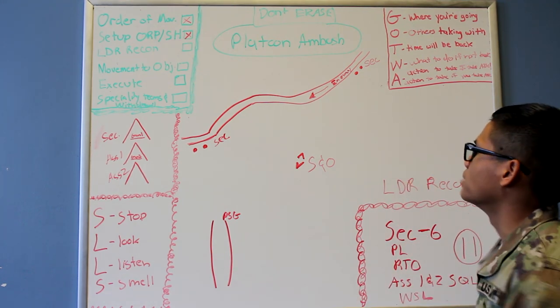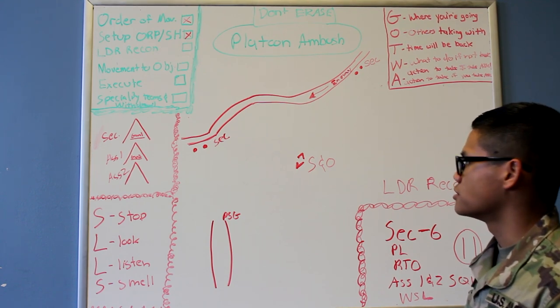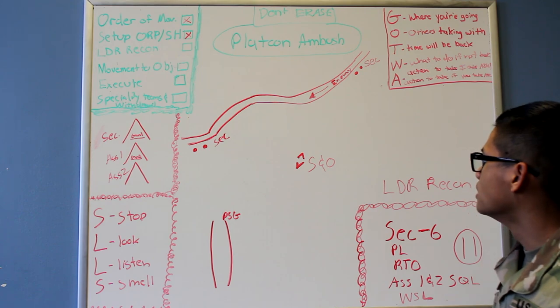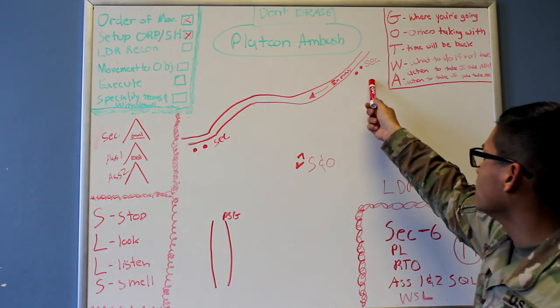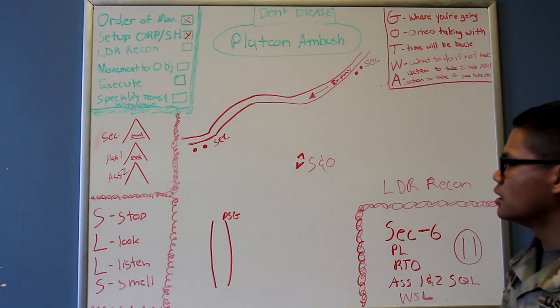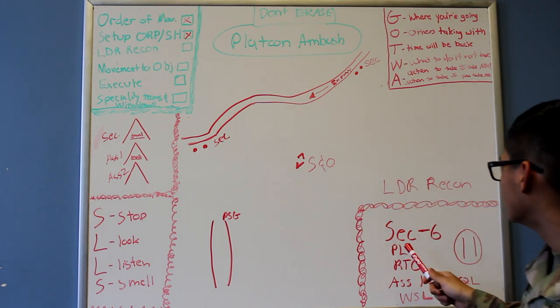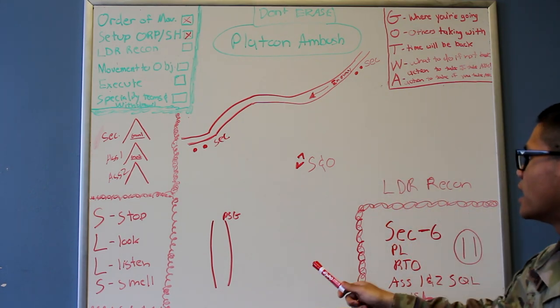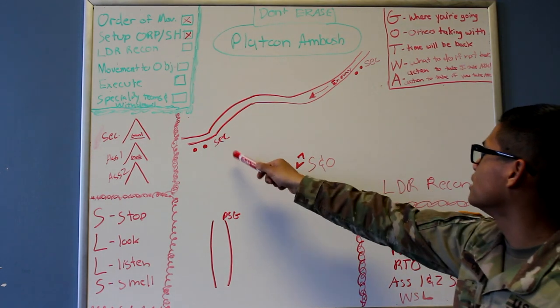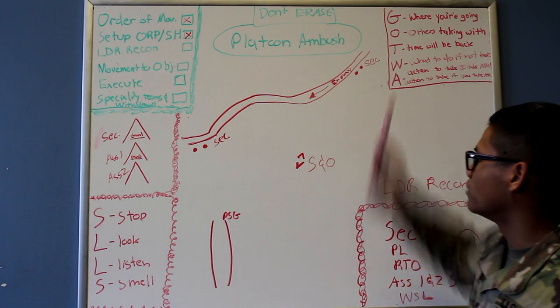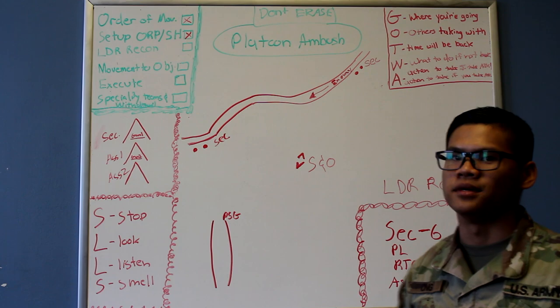Once that's done, once SEALS is completed, the PL and the RTO will start to emplace their security left and right flank. Once security left and security right is set, the PL will also get MAWAGA, and then the PL and the rest of the leaders recon start heading back for those who have not already been in place. Security, like the SNO, security left and security right will stay in place. And then he heads back to the ORP.